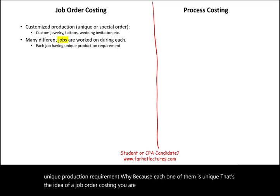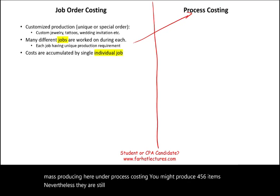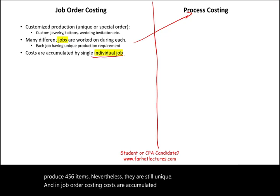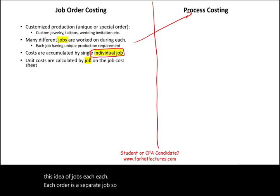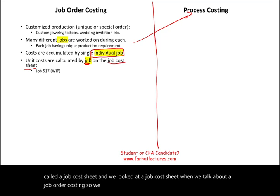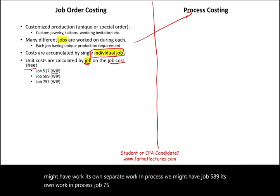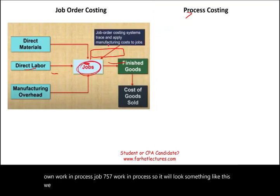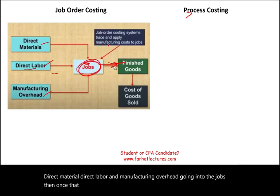In job order costing, you are not mass producing. You may produce four, five, or six items, but they are still unique. Costs are accumulated by individual job, and each order is a separate job. Unit costs are calculated by job on a job cost sheet. Each job — such as job 517, job 589, job 757 — has its own separate work in process, and once the job is done, it moves to finished goods.